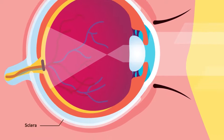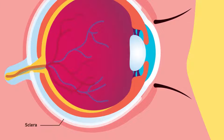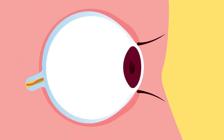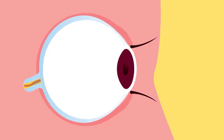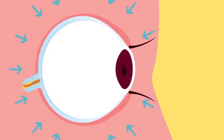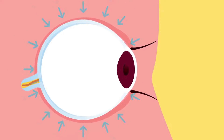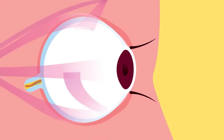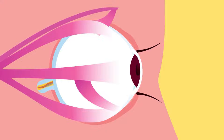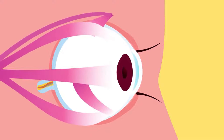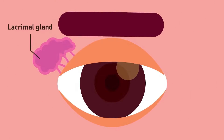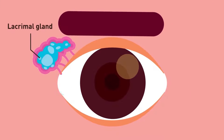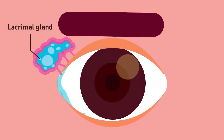Next comes the sclera, a tough, opaque, non-elastic layer on the outside of the eyeball that helps to maintain the shape of the eyeball. Eye muscle holds the eye in place. The lacrimal gland, or tear gland, secretes tears.